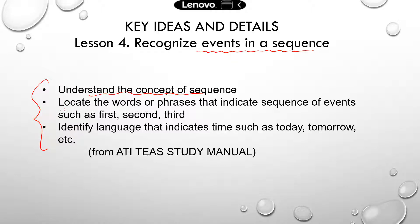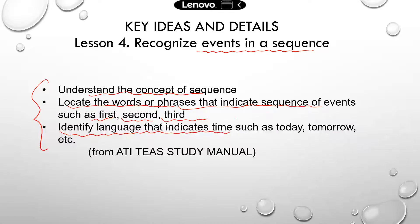Second, you need to be able to locate the words or phrases that indicate the sequence of events — things like first, second, third, last. And finally, you need to identify language that indicates time. Sometimes there's an overlap between words that indicate sequential order and words that indicate time. Words that indicate time are things like today, tomorrow, two years later, since last week.